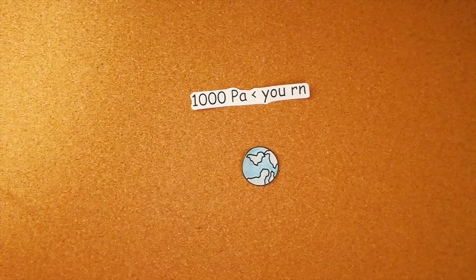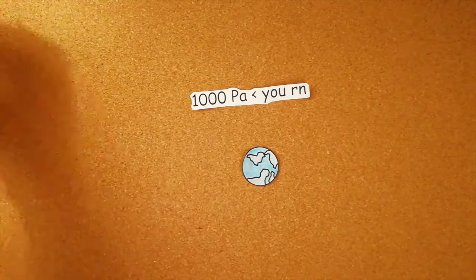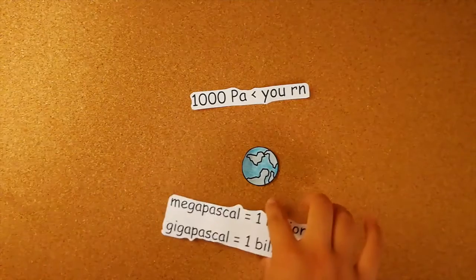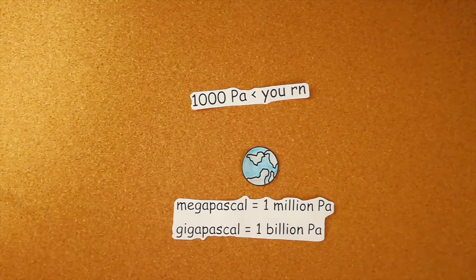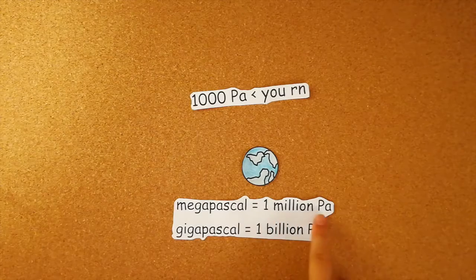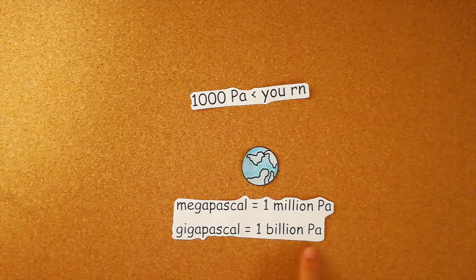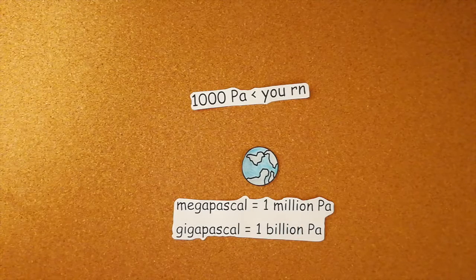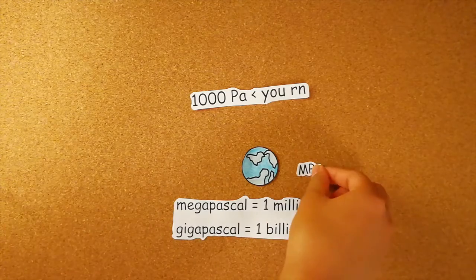Because Pascals are such small measurements of pressure, you typically hear more about megapascals or gigapascals. It's the same thing as megabytes and gigabytes. A megapascal is one million Pascals and a gigapascal is a billion Pascals. Their annotations are MPA and GPA.